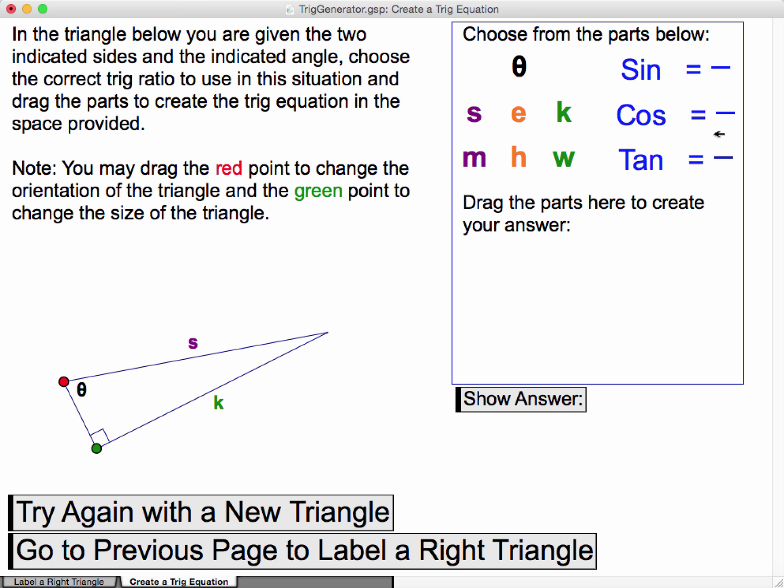And so students are asked to choose from the appropriate pieces here. So in this case, we've got this angle, a hypotenuse, and an opposite side. So we're going to choose sine.